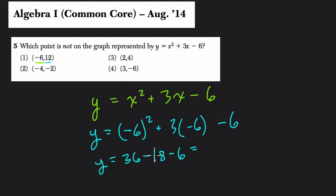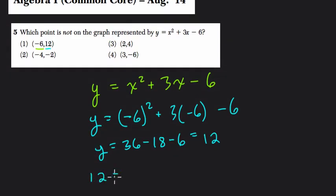36 minus 18, that's just 18. Minus 6, that's 12. So in fact, we plugged in negative 6 for x and the output was 12. That means that this point balances this equation. Therefore, it is a point on this function. This is not the answer.